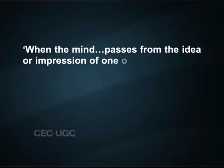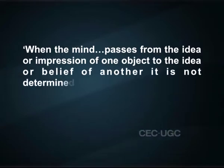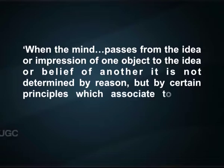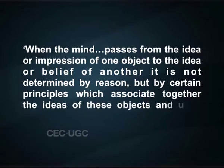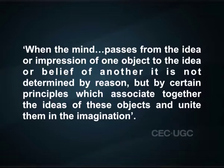Imagination. Hume has an imagistic theory of thought. He thinks that thought uses images derived from impressions, and therefore thinks of the imagination as underlying all thought. What makes the imagination important for Hume is that it connects up ideas according to the principle of association. When the mind passes from the idea or impression of one object to the idea or belief of another, it is not determined by reason, but by certain principles which associate together the ideas of these objects and unite them in the imagination.